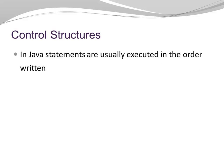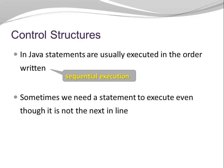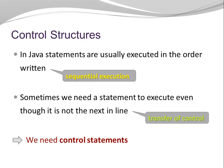In Java, statements are usually executed in the order written. Here we talk about sequential execution, which means we execute one statement after the other as specified in your source code. However, sometimes we need a statement to execute even though it is not the next statement in line. Here we talk about transfer of control, and for that we need control statements.